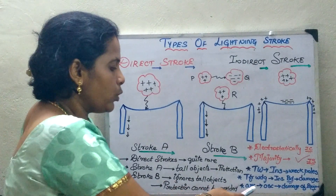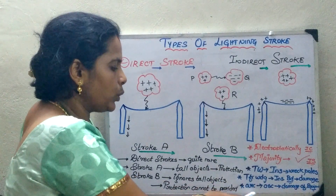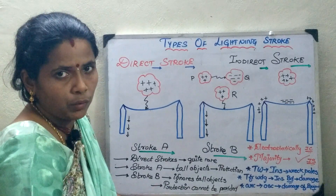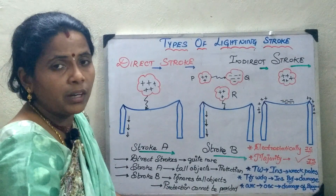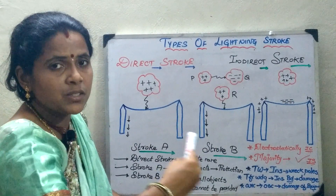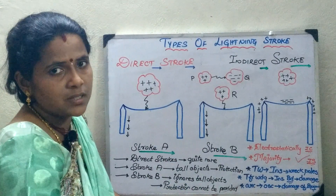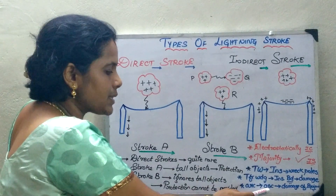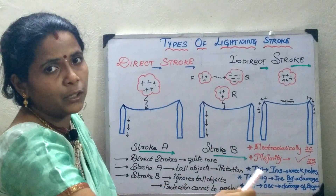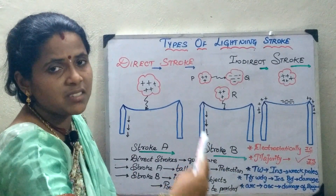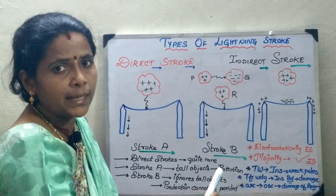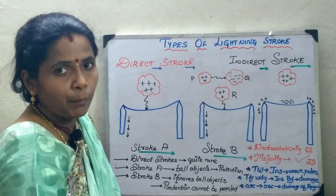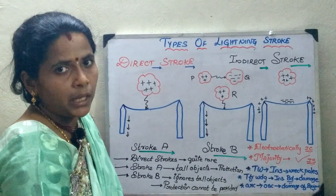Third, due to the arc set up by the lightning waveform, oscillations are created in the line. These oscillations are nothing but voltage surges, and they may lead to damage of the equipment.